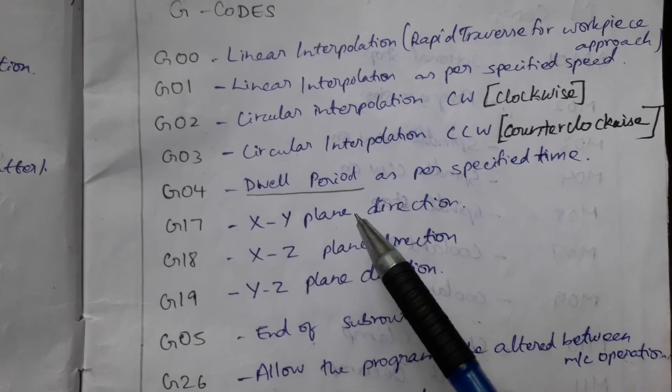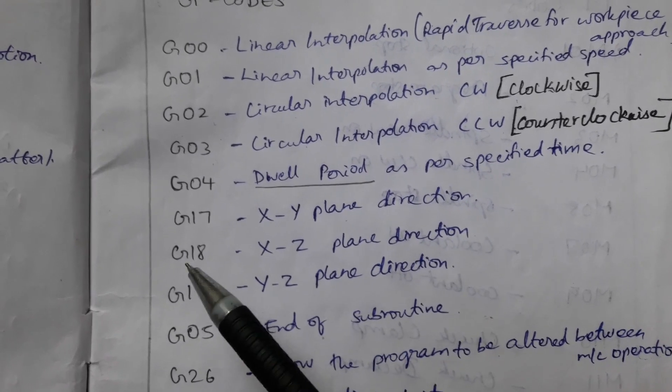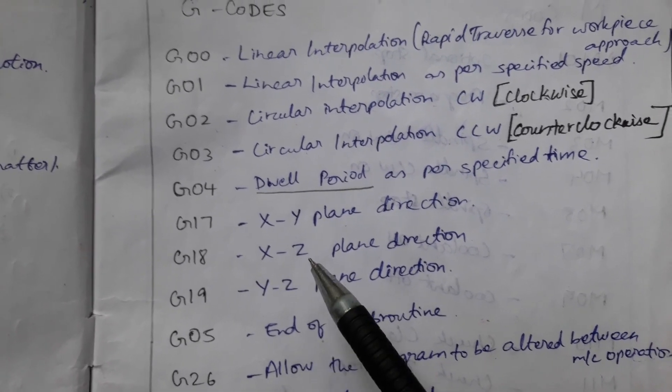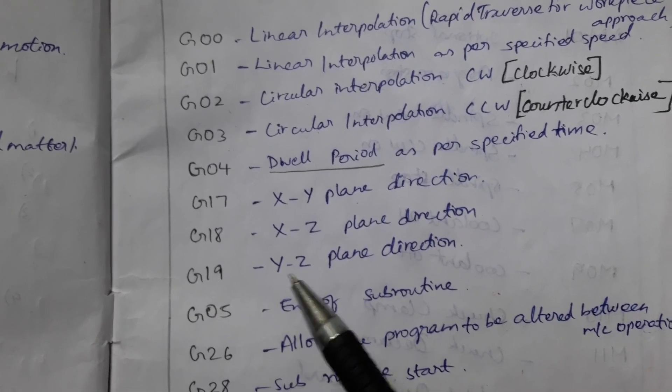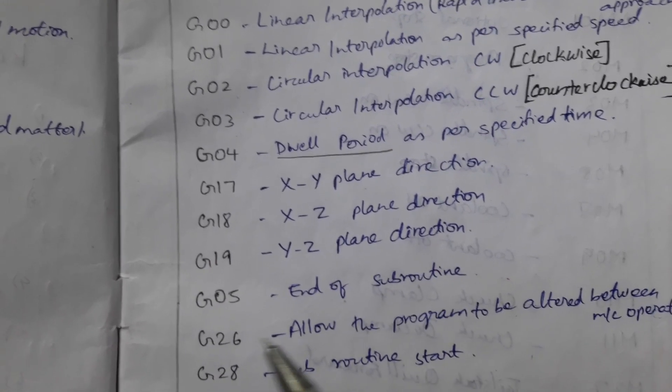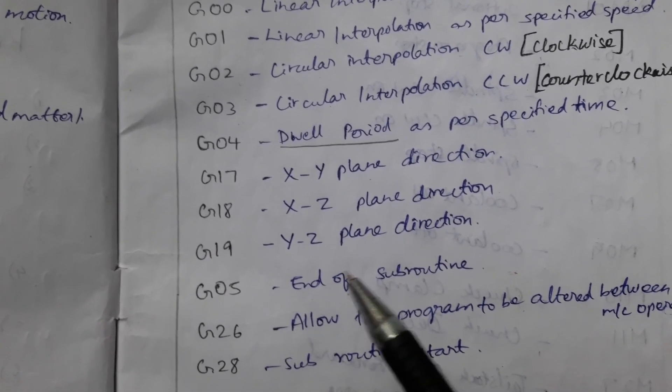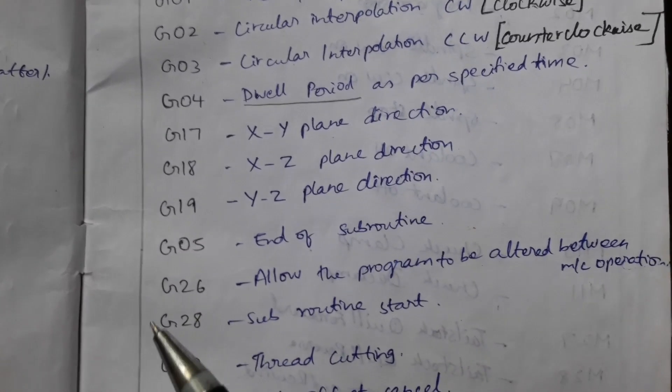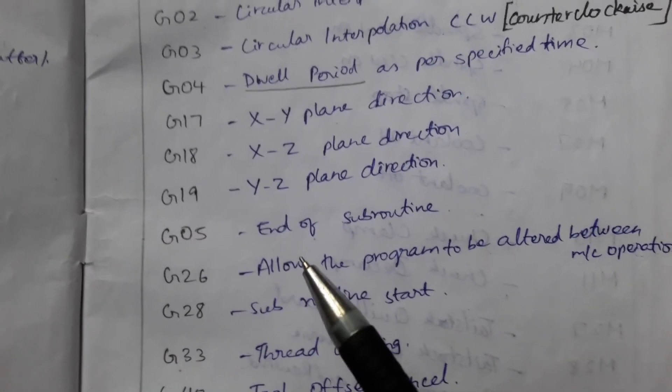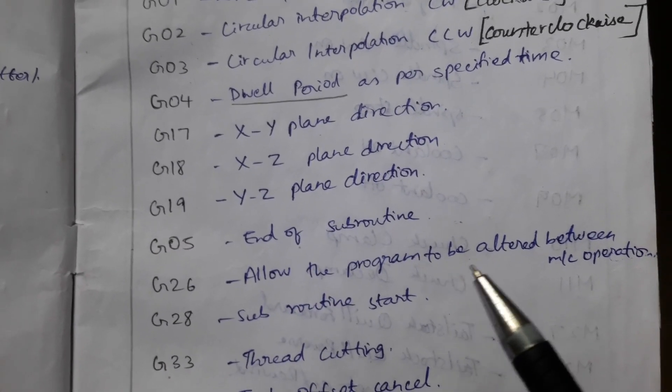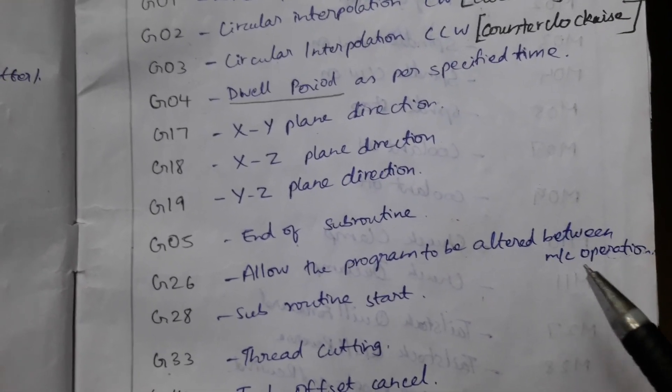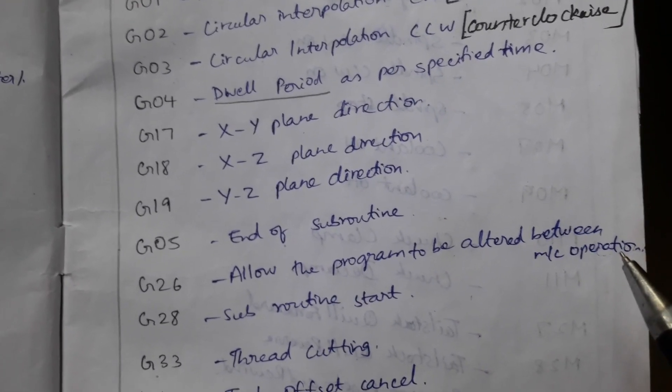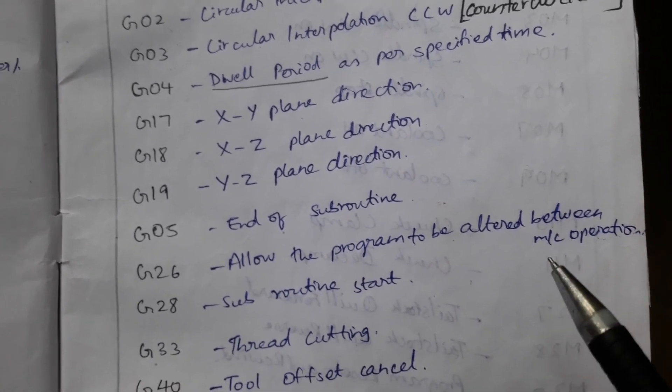G17, XY plane direction. G18, XZ plane direction. G19, YZ plane direction. G05, end of subroutine. G16, G26 allow the program to be altered between machine operations when the operator needs to do some other kinds of alteration in the workpiece.